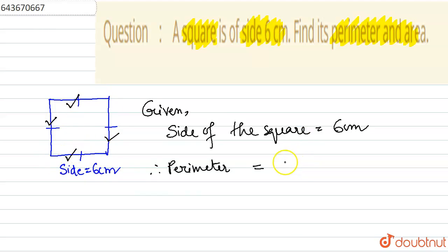Here the formula of perimeter of square is 4 into side. So here side given is 6 centimeter. So 4 into 6 is 24 centimeter.